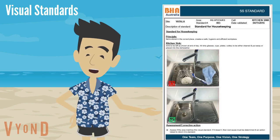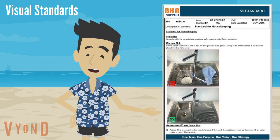Like this example here, there's a standard format across every visual standard. It has document control features like a title, a prover, and date. Most importantly, it's very obvious what the standard is communicating. Use very few dot points and ensure the photos are clear and concise. These are then located in the work area for easy reference.